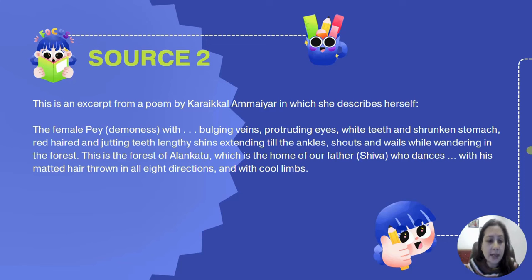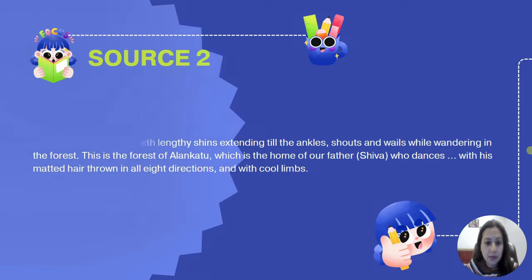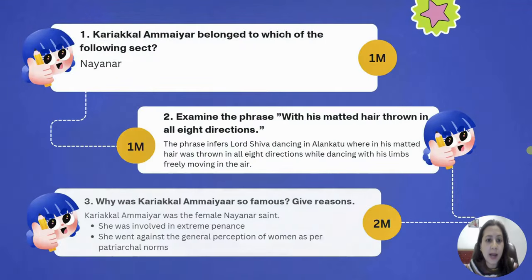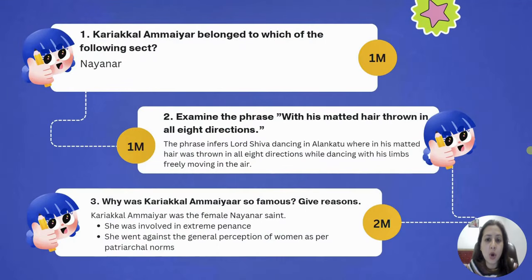The next source is a poem by a Bhakti saint, Nainar Karayikal Amayar. She has written this poem and portrayed a woman through it. The first question: Karayikal Amayar belonged to which sect? Nainar.